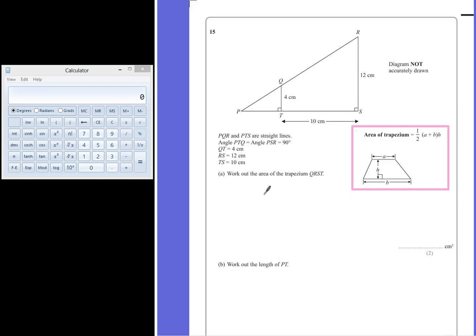Question A asks us to work out the area of the trapezium QRST. The formula for area of the trapezium is given in the front of your formula book. It's a half A plus B times H, where A and B are the parallel sides.